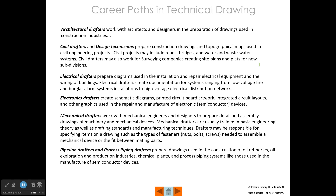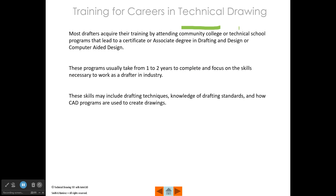Career paths in technical drawing include architectural drafters, civil drafters, electrical and electronic drafters, mechanical drafters, pipeline drafters, process piping drafters, and aerospace drafters. That's partly why I wanted to show you all those drawings — to give you an idea of what these different disciplines look like. Most people get their training at a community college or technical school program that may lead to a certificate or an associate's degree in drafting, design, or computer-aided design. These programs are usually one to two years in length and typically include teaching you drafting techniques, drafting standards, dimensioning practices, and how CAD programs are used to create drawings.